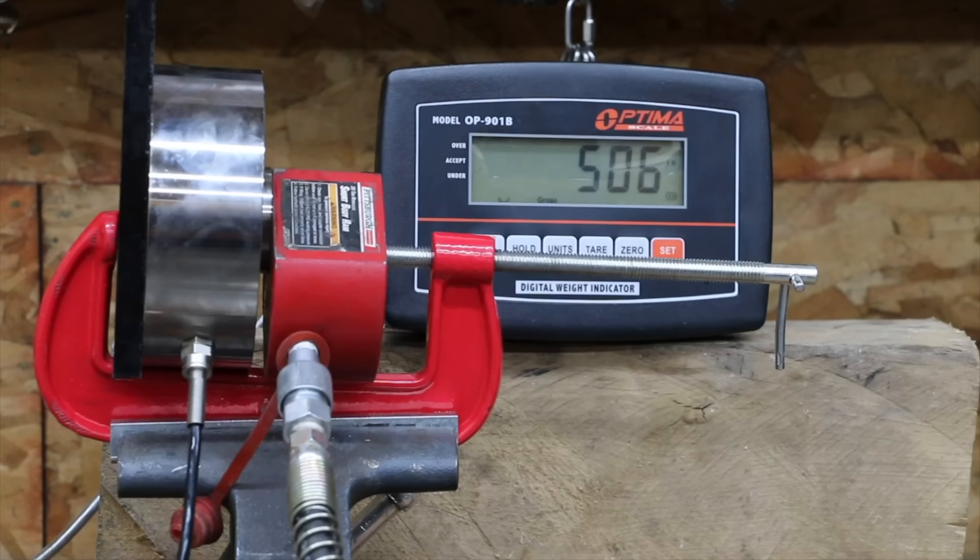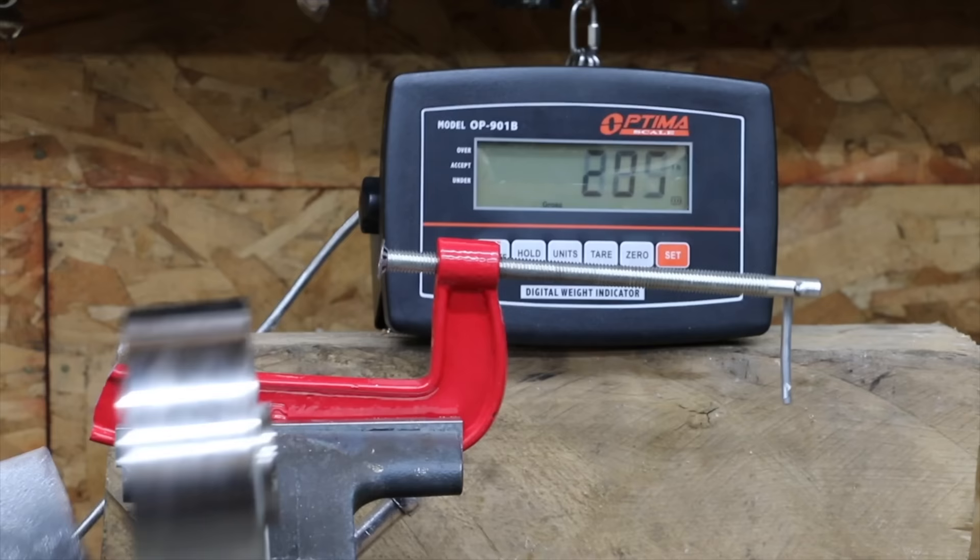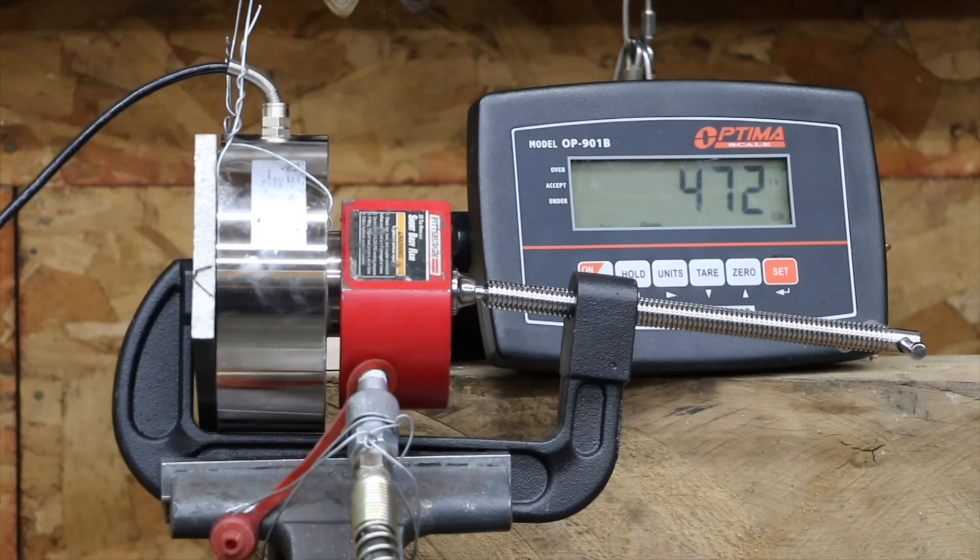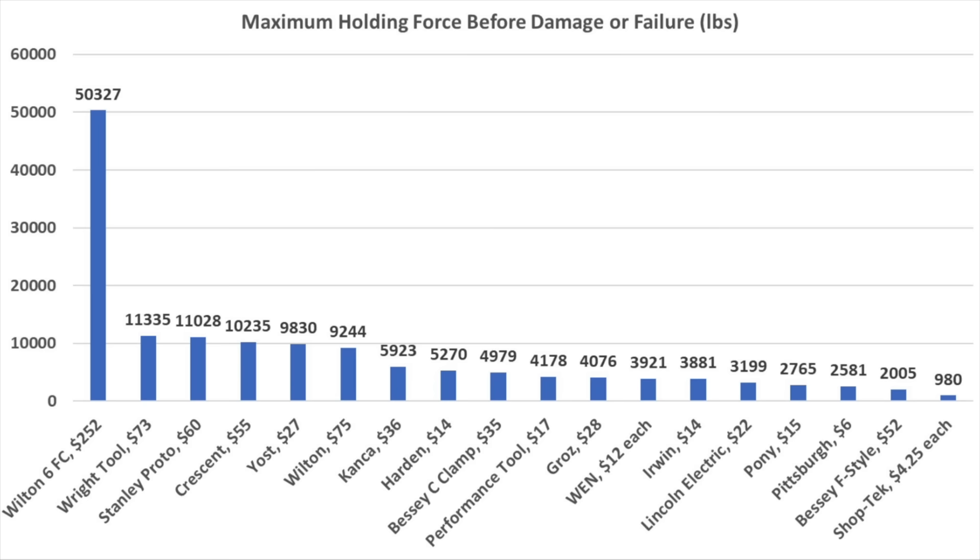If the clamp is already under load, let's see how much holding force each brand can offer before experiencing damage. The Shoptek went in two different directions at 980 pounds. The Performance Tool's adjustment screw doesn't offer too much clamp load, but the frame does have pretty good strength at almost 4,200 pounds. After a pretty rough start, the Performance Tool brand recovered nicely, but the Shoptek did not. The Shoptek finished in a very distant last place.